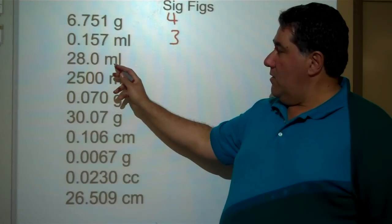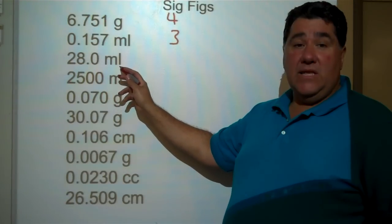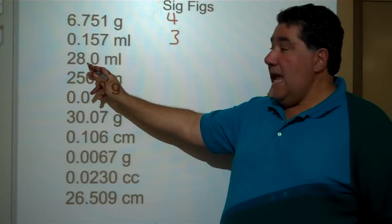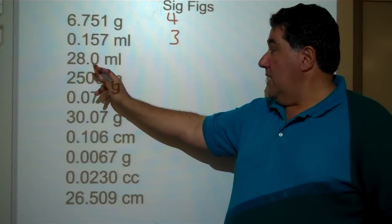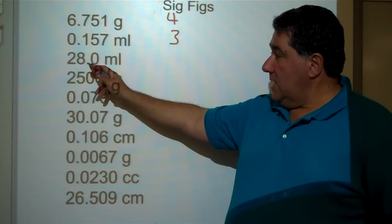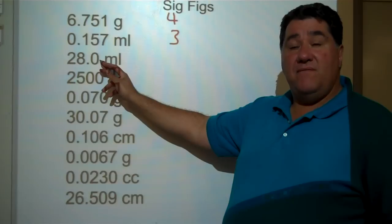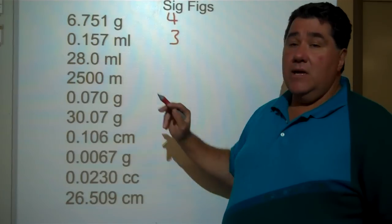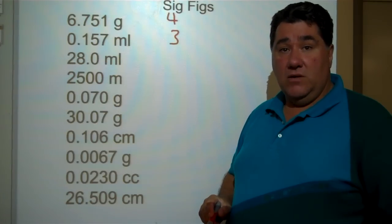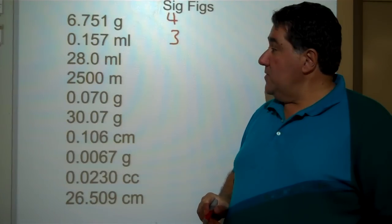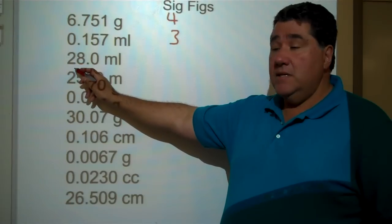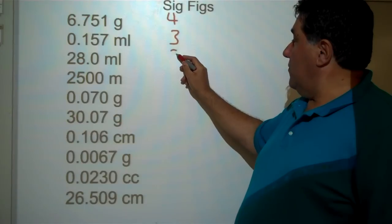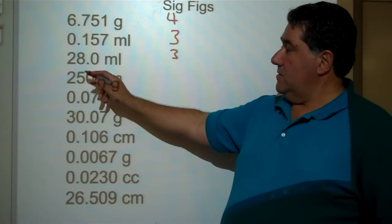28.0 milliliters. You know two is significant and eight is significant by rule number one. Then there's a decimal point and there is a zero that follows at the end of this number. That zero is a significant figure. So the total number of sig figs in this number is three.